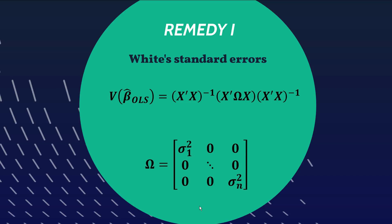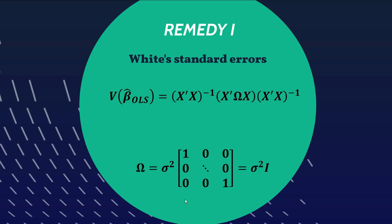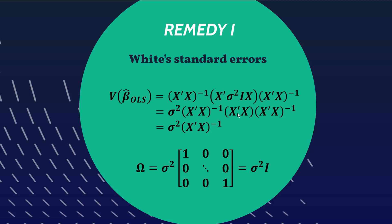If we have homoscedastic errors — no violation of the constant variance assumption — then all the diagonal variances are the same, and we can call them sigma-squared. The variance-covariance matrix simplifies to sigma-squared times the identity matrix. Substituting that into the expression for the variance of the beta vector, because sigma-squared is a scalar it comes out the front, and everything reduces very neatly to a clean expression for the variance of our betas, from which we take the square root to get our standard errors.